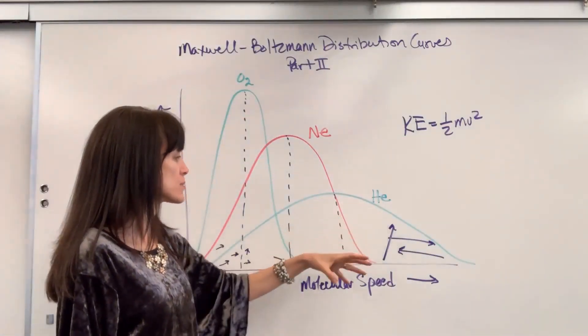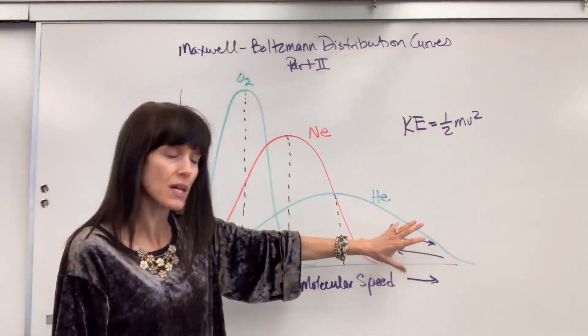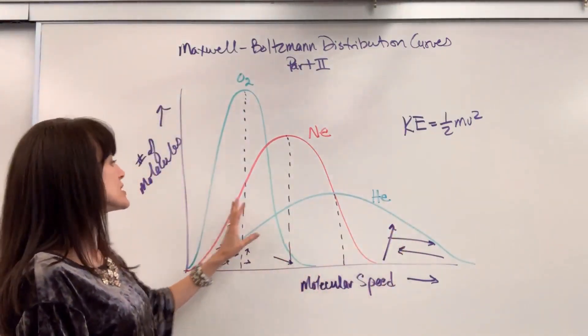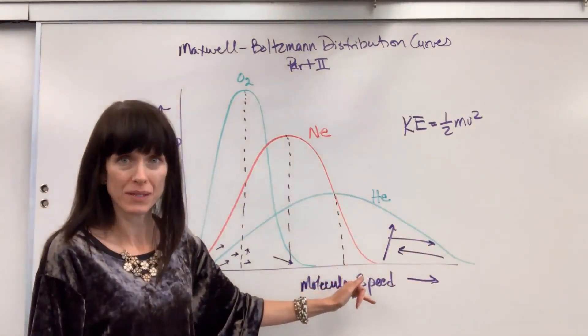Whereas the helium is going to have a lot of molecules with really, really high speeds. So when you take the average speed of all of those molecules, it puts that average way up here.